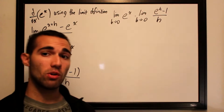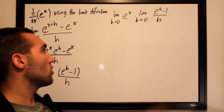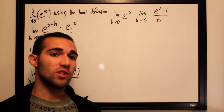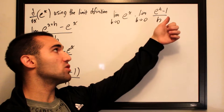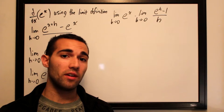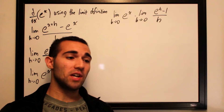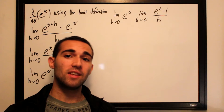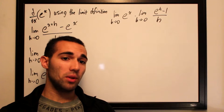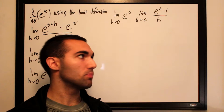As h approaches 0, e to the x is completely unaffected — it stays exactly as it is. The really tough part of this proof is proving that the limit as h approaches 0 of e to the h minus 1 over h equals 1. A lot of people prove this using L'Hôpital's rule, but L'Hôpital's rule assumes you already know that the derivative of e to the h is e to the h, which completely defeats the purpose of this proof.